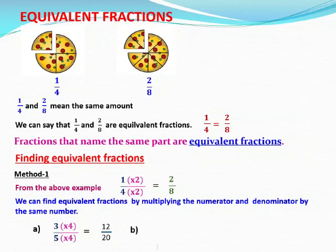Next example B: 1 by 6. Find one equivalent fraction of 1 by 6. We can multiply numerator and denominator by the same number. Let us multiply with 3. Numerator 1 times 3 is 3, denominator 6 times 3 is 18. So 1 by 6 and 3 by 18 are equivalent fractions.